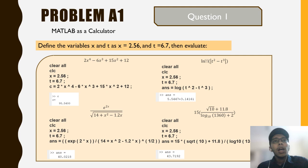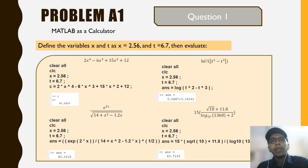First we write the variables in the MATLAB script file x and t, then write the equation in the correct form. For example, equation c: 2 multiplied by x to the power of 4 minus 6 multiplied by x to the power of 3 plus 15 multiplied by x to the power of 2 plus 12. We do the same for b, c, and d, then find the output for each equation as shown in the command window in MATLAB.